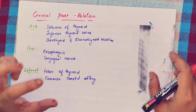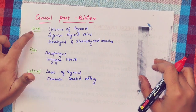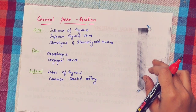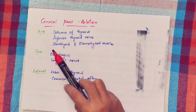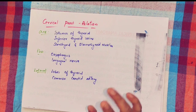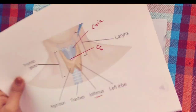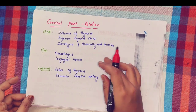Relations of the trachea: in the cervical part, we consider anterior, posterior, and lateral relations. Anteriorly: isthmus of the thyroid gland, inferior thyroid veins, and sternohyoid and sternothyroid muscles. Posteriorly: the esophagus and the recurrent laryngeal nerve. Laterally: the lobes of the thyroid gland and the common carotid artery. These are the anterior, posterior, and lateral relations of the cervical part of the trachea.